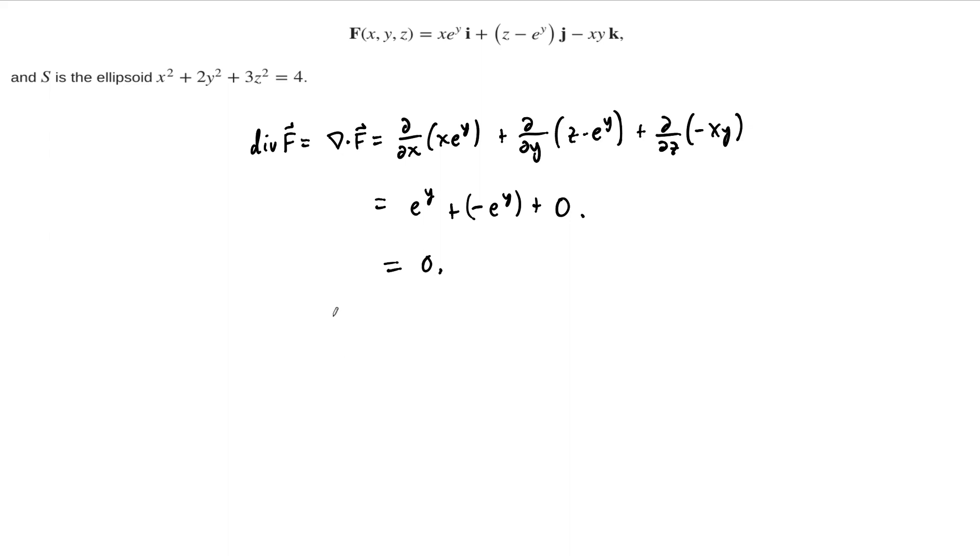What we can then write down is that the flux of this vector field F across the surface, which in this case happens to be the ellipsoid, this is just equal to, by the divergence theorem,